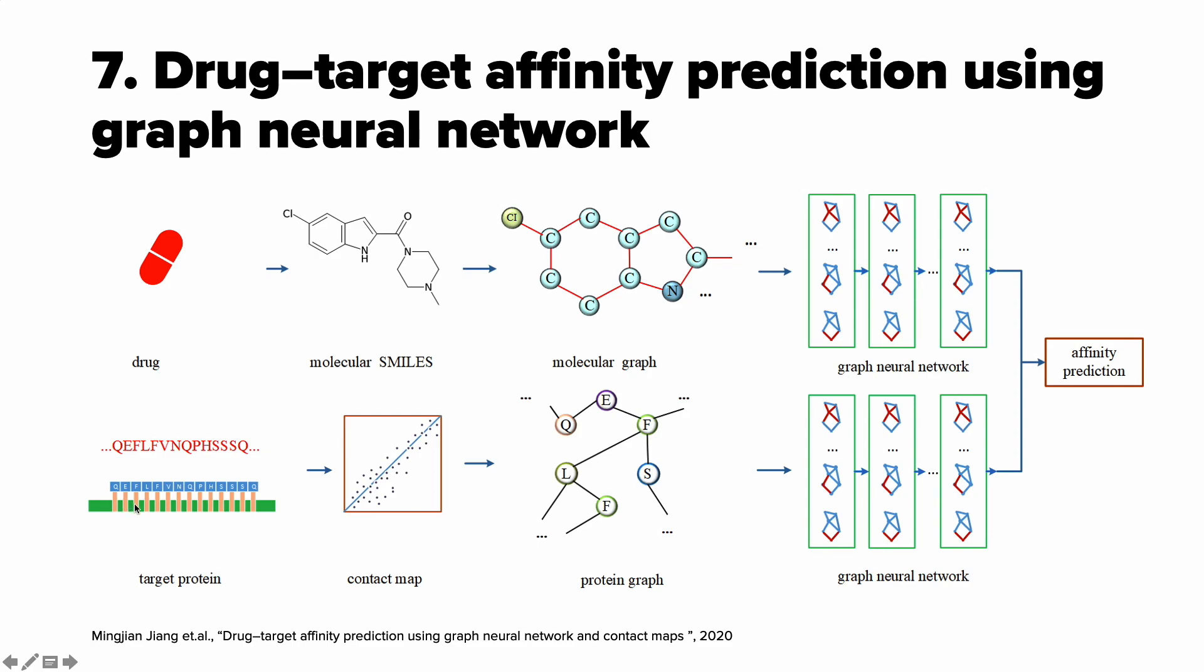Then you extract a contact map out of that. The contact map is a simple representation of a secondary structure of this target protein. And then you transform this contact map into a protein graph. Now you have two graphs for a ligand and for a receptor. And you pass these graphs into graph neural networks. Later you concatenate these two neural networks and feed them to affinity.